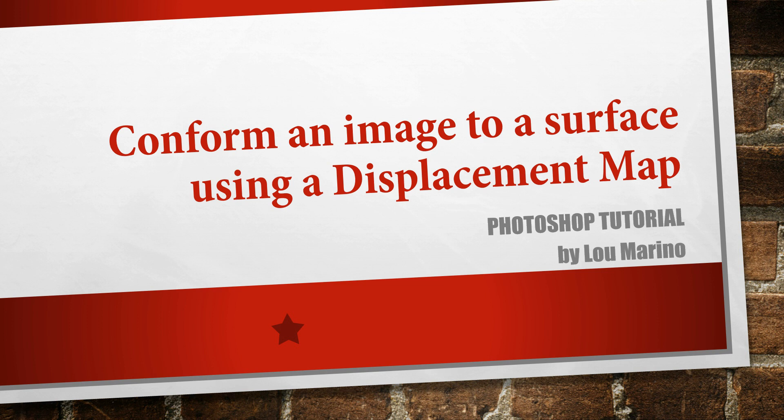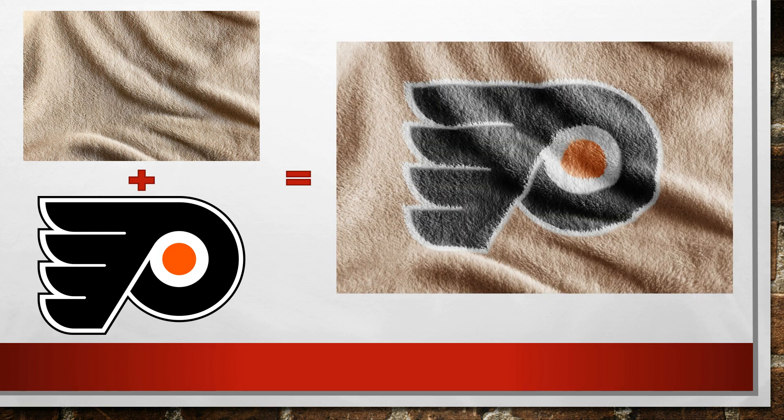This is Lou Marino. In today's tutorial we're going to take a flat image and conform it to a surface using a displacement map. We're going to take a surface that's not flat, like a blanket, and add a flat image to it — in this case a logo — so that when we put them together, it looks like the logo is just part of the blanket.